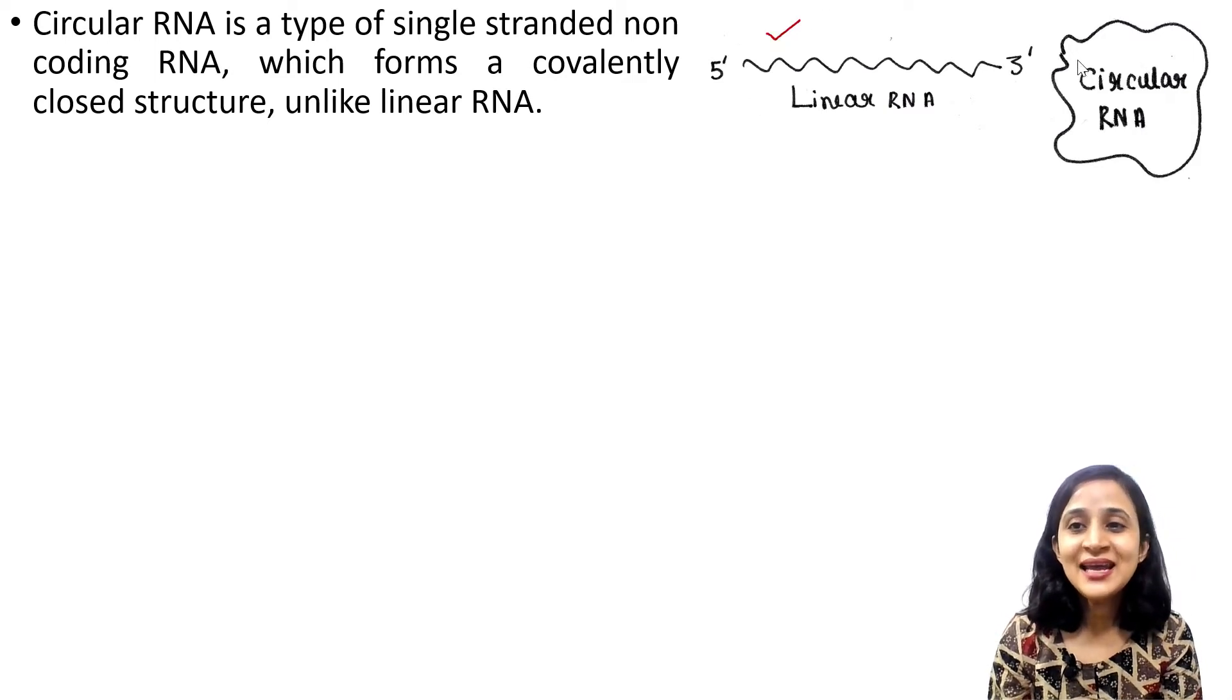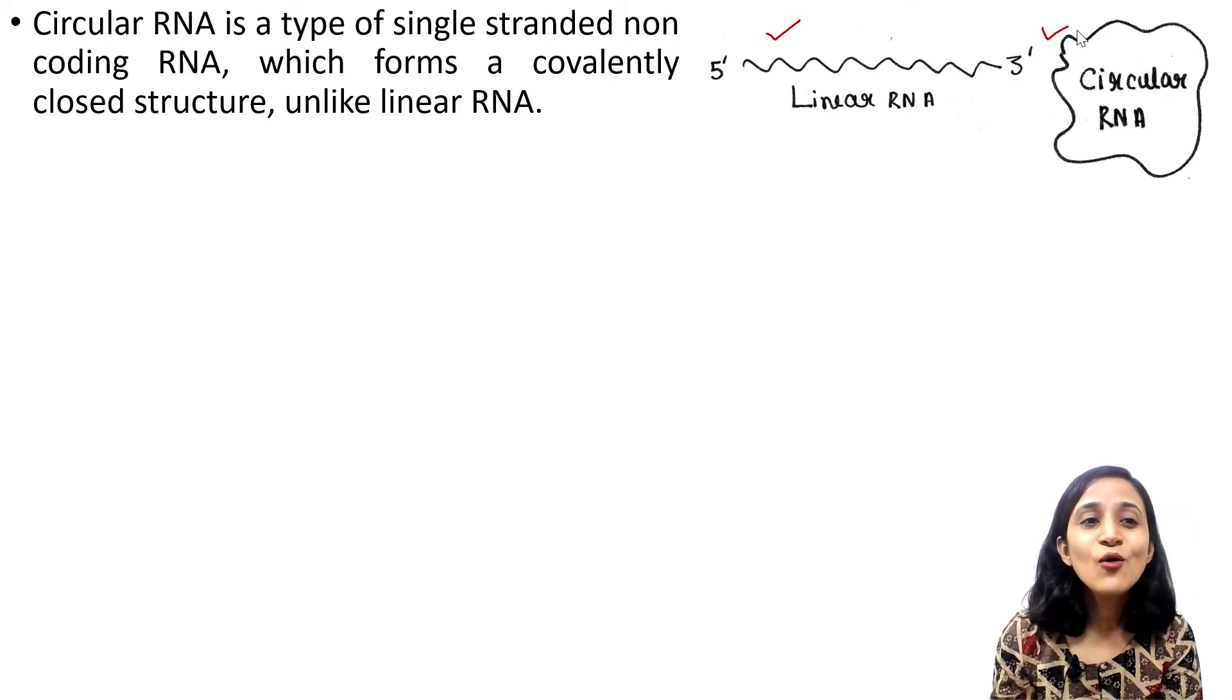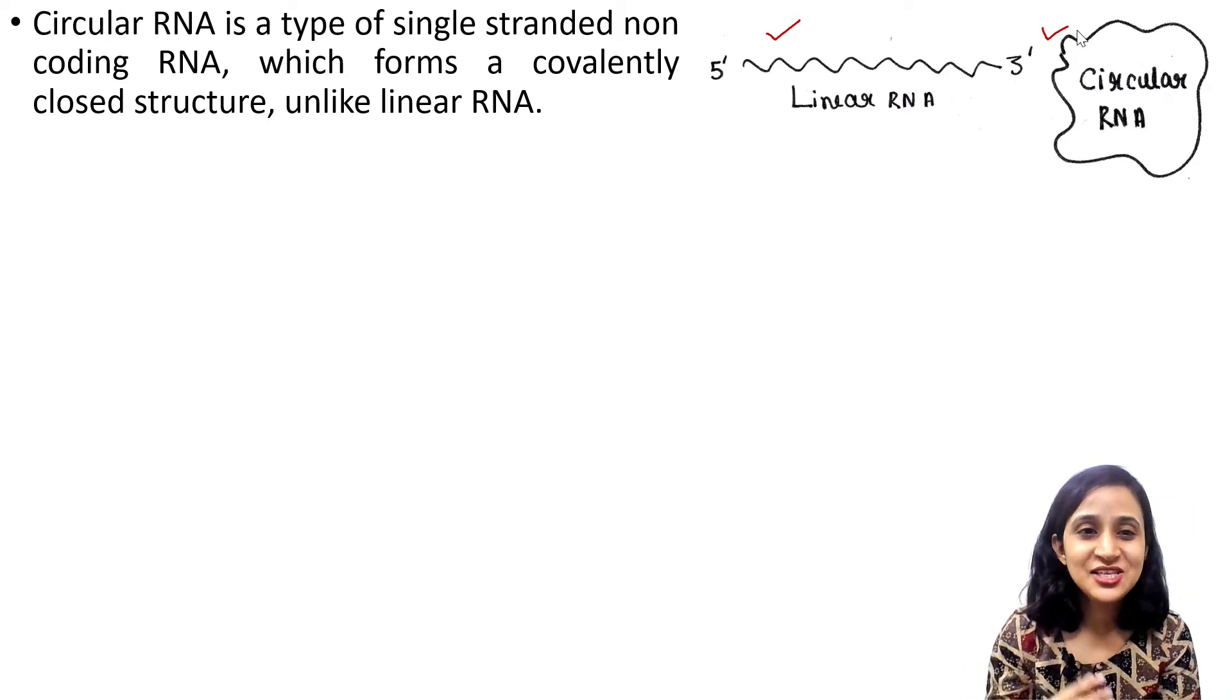So, this is the linear RNA and this is the circular RNA. You can see it has a covalently closed structure because the 5' and 3' end of the RNA is covalently linked with each other.